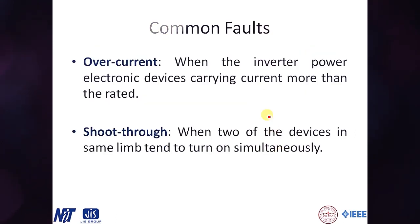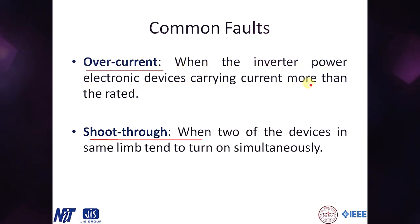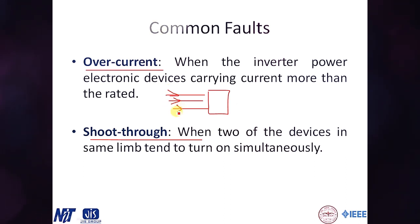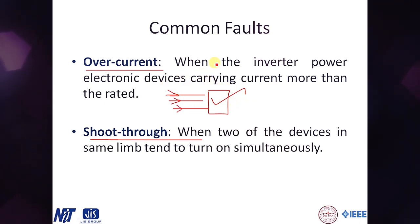Now, what faults are we talking about? The first is overcurrent — when the inverter's power electronic devices carry more current than rated. For example, a three-phase fault, phase-to-phase fault, or short circuit at the output will try to drag more current from the inverter. While relays protect connected loads like induction motors, the inverter itself has no inherent protection, so the IGBT will carry excessive current and eventually burn out due to thermal runaway.